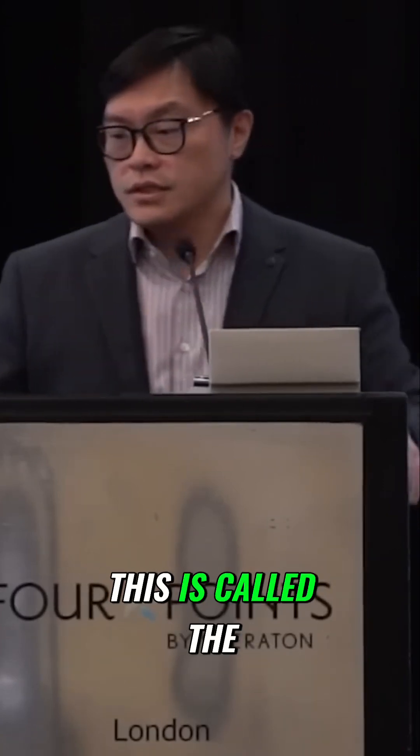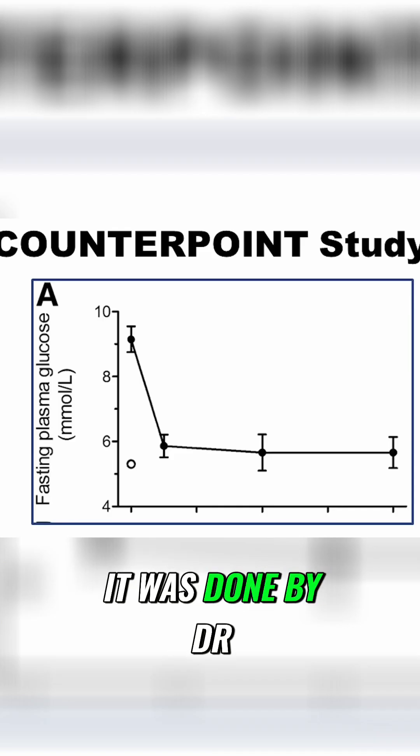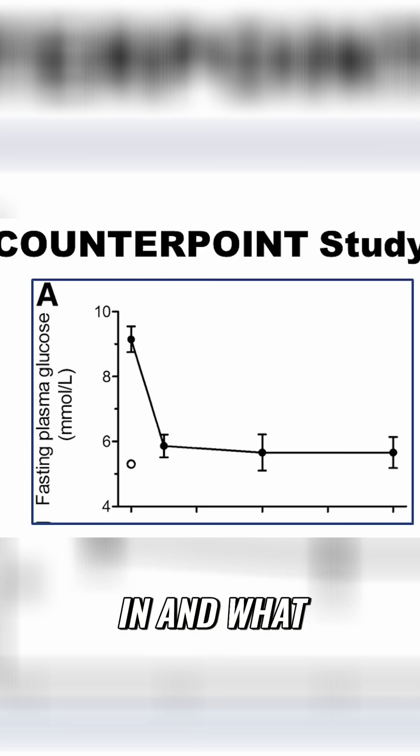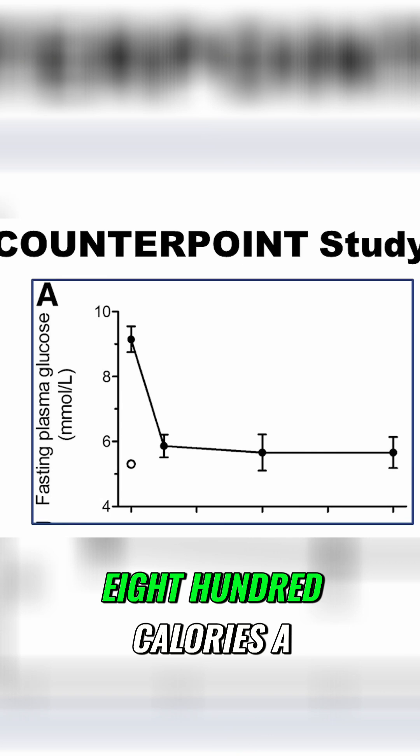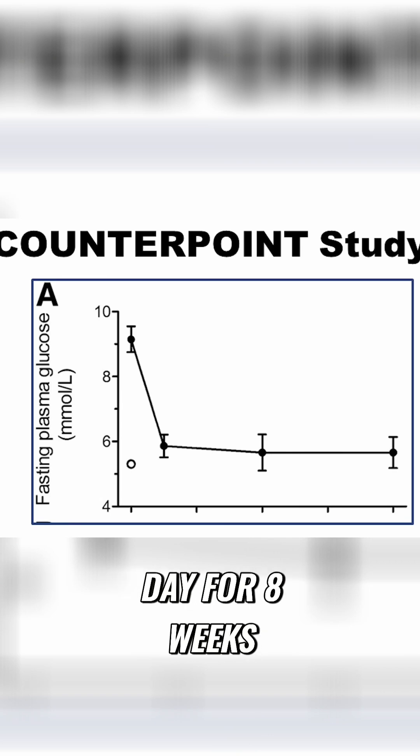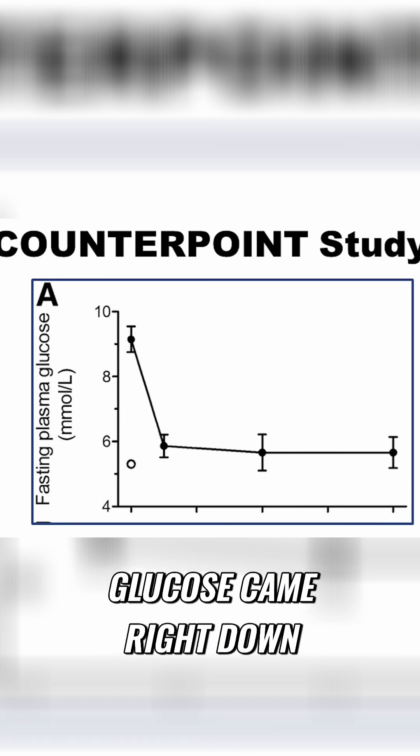Is it really burned out? So this is called the counterpoint study. It was done by Dr. Taylor in the UK in 2013, and what he did was put people on a very low calorie diet, 800 calories a day for eight weeks, and the fasting blood glucose came right down.